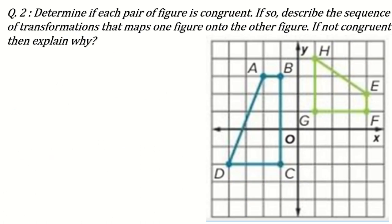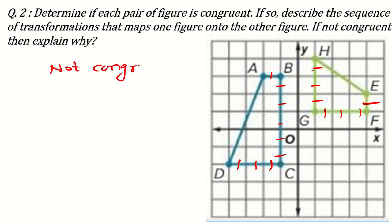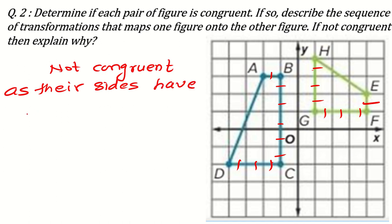Another question of the same type: first we have to check whether the figures are congruent or not. This is one block and this is also one block — no problem. This side is 1, 2, 3 and this is also 1, 2, 3. But one line here is 1, 2, 3, 4, 5 and here it is only 1, 2, 3. It means these pictures are not congruent. Why? Because their sides have different measures — they have different lengths.